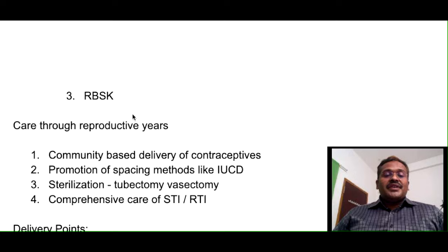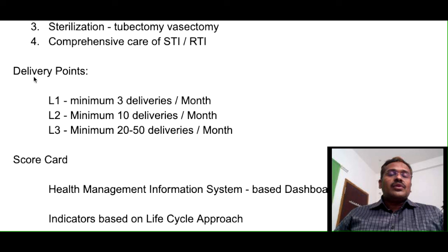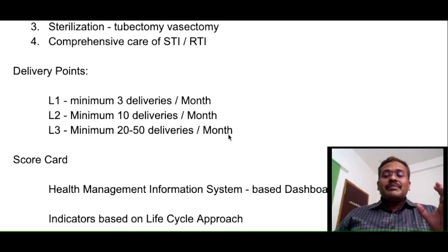Care through reproductive years includes community-based delivery of contraceptives, promotion of spacing methods like IUCD, and sterilization methods — tubectomy and vasectomy promotion — along with comprehensive care of sexually transmitted infections and reproductive tract infections. The concept of delivery points was also given importance, as the National Rural Health Mission was implemented at the same time. Delivery points: L1 — minimum 3 deliveries per month; L2 — minimum 10 per month; L3 — minimum 20 to 50 per month. Centers are strengthened based on their caseload.